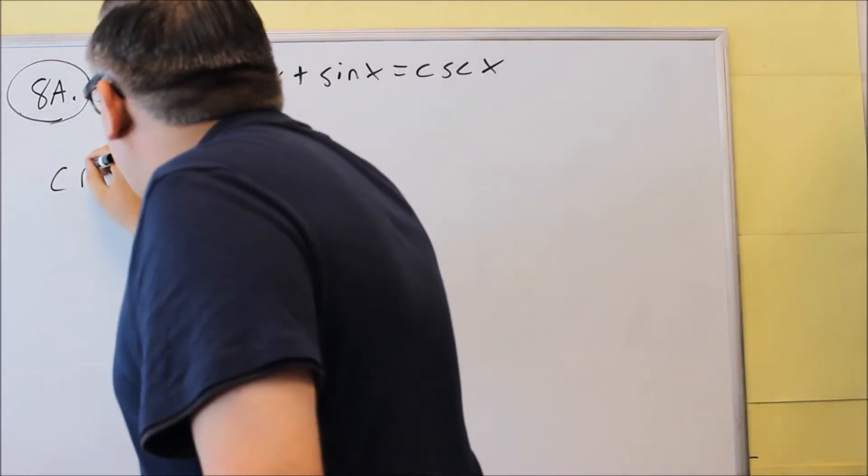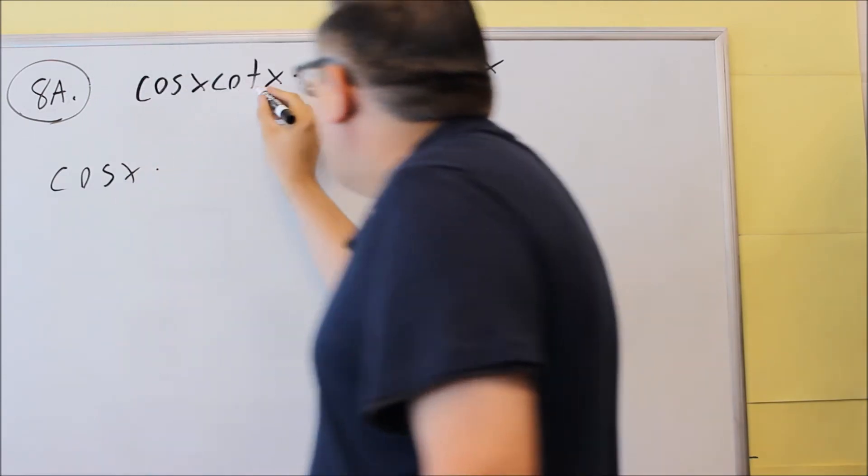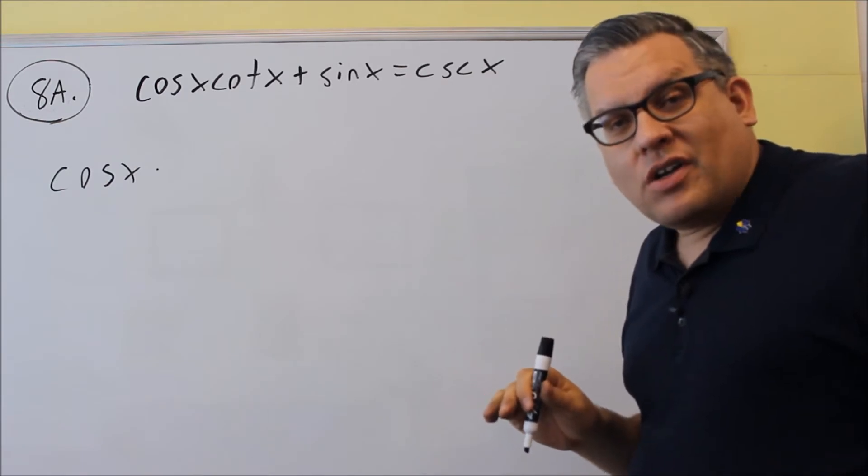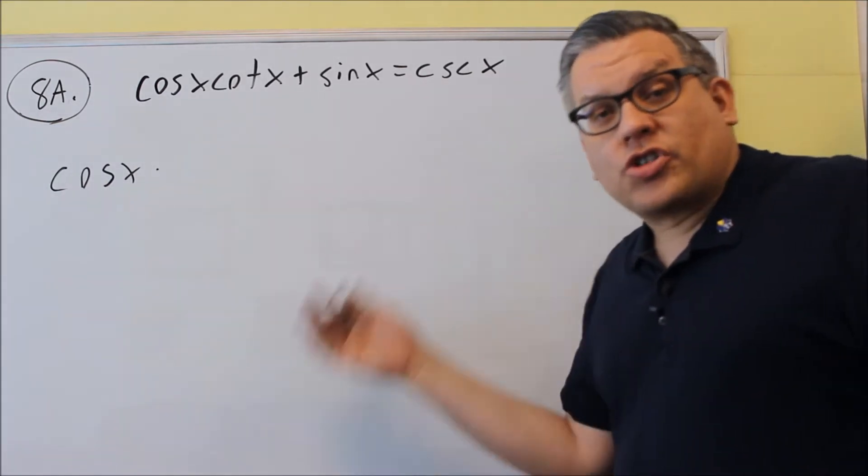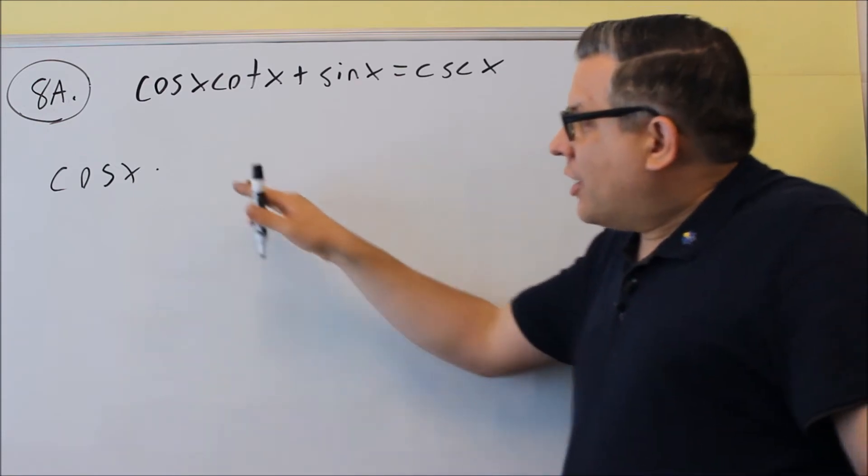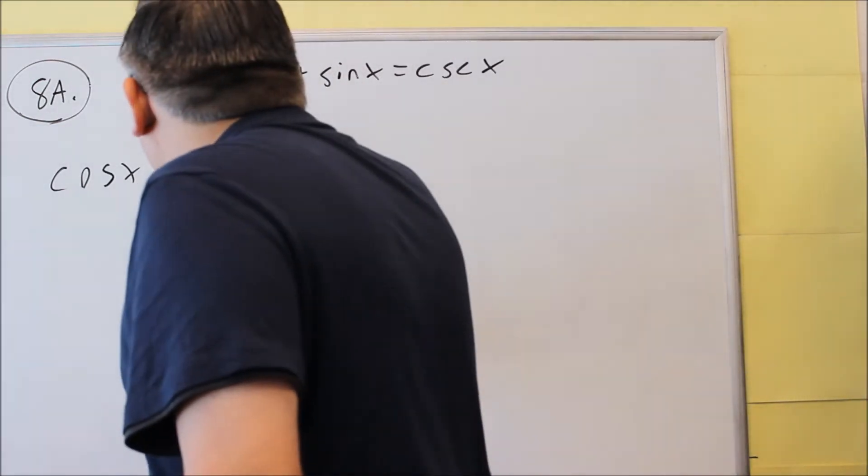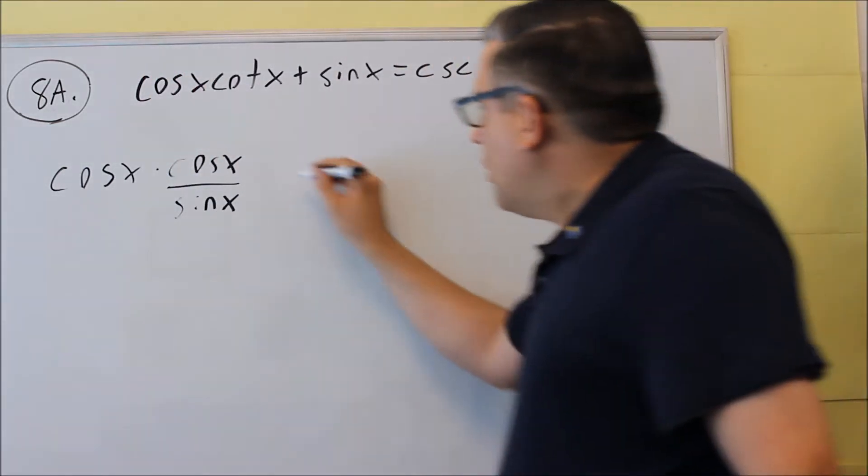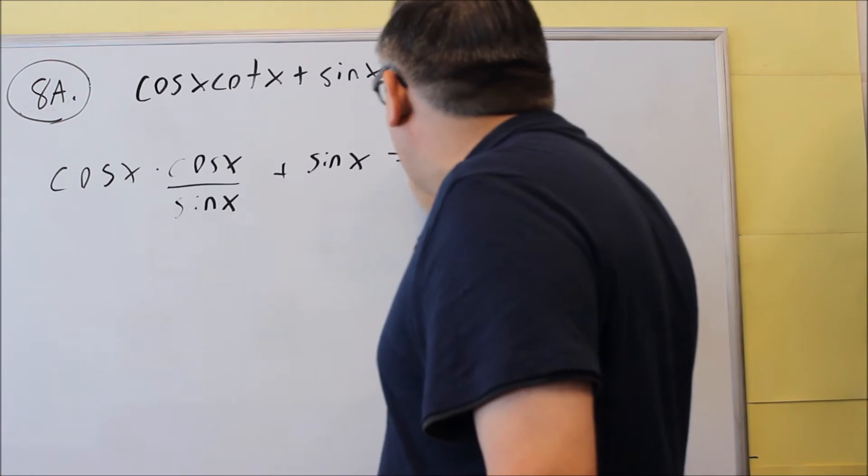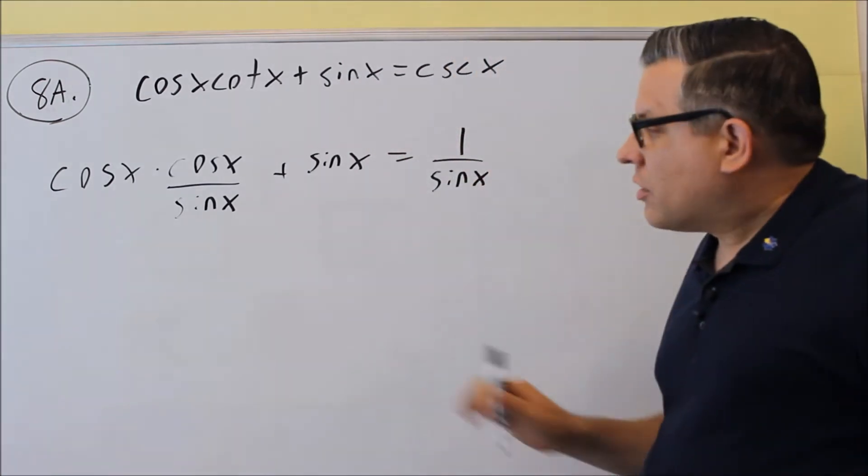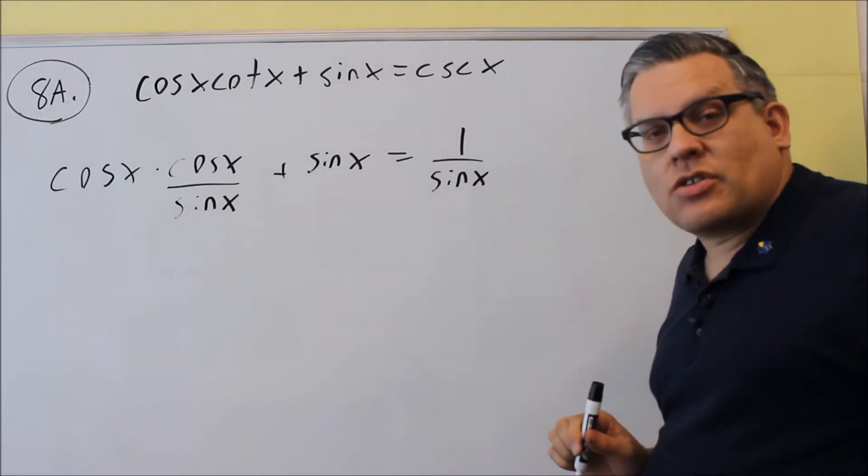Okay, so I'm going to start with, I have cosine. I'm going to put the identity in for cotangent. Again, these identities that I'm using here, you want to make sure you know them. So that's going to be your quotient identities and your reciprocal identities. Those are the ones you want to know. So cotangent is cosine over sine. So we're going to begin with that one. And then I have plus sine x. I'm going to change this into 1 over sine x. Okay, so now I've changed everything into sines and cosines.